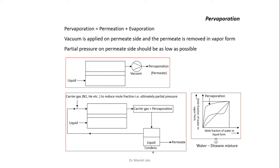For vaporization, we generally use two different processes. In the first process, we use a vacuum pump to create high vacuum on the permeate side; due to the high vacuum, desorption occurs in the vapor phase. Or we can use a carrier gas like nitrogen or helium on the permeate side. Due to these gases, the partial pressure of the dissolved component will reduce and they will desorb into the vapor phase.